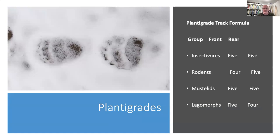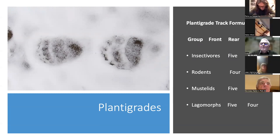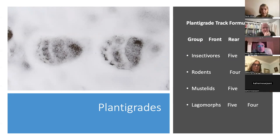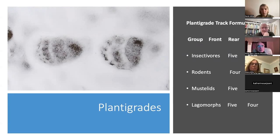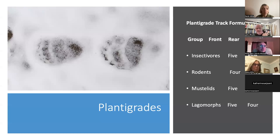Starting with what we might call the more primitive foot, we have plantigrade animals — those capable of walking or standing on the entire sole of their foot. The carpal pads, palm pads, and toe pads can all show in the track, though they don't always. In Britain, insectivores are plantigrade. We can just call them 'sole walkers' — they show five toes on the front and five on the rear, though the thumb often doesn't show.